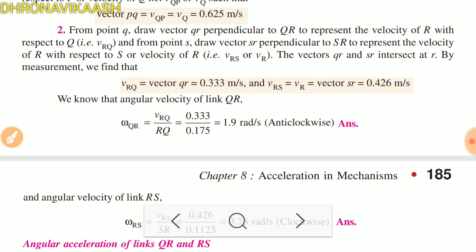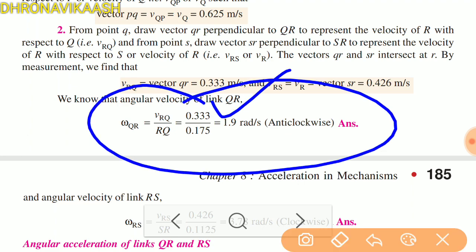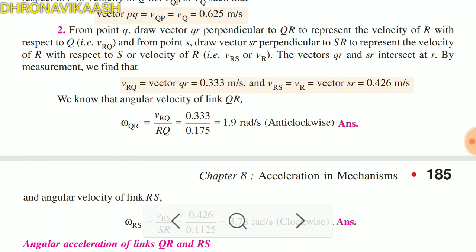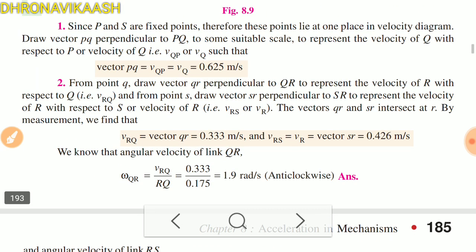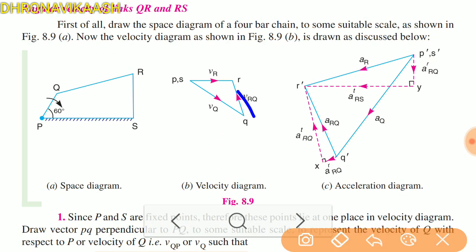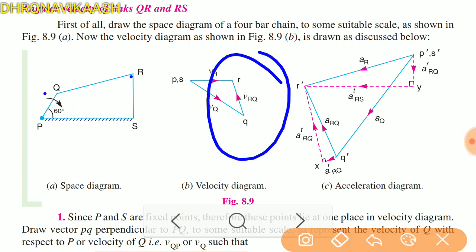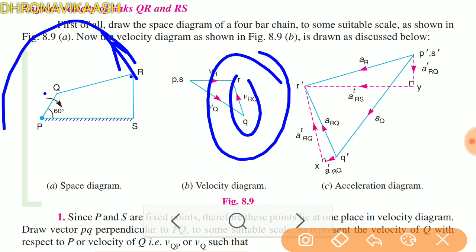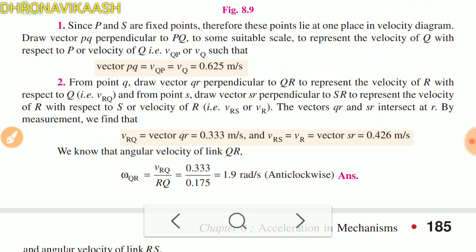Vector measurement: omega_QR = V_RC / R_Q. V_RC is 0.33 m/s and R_Q is 0.175 m, giving approximately 1.88 radians per second anticlockwise. The direction is anticlockwise — we can confirm this from the velocity vector direction.